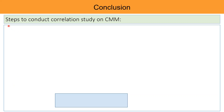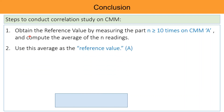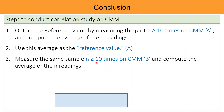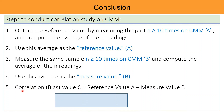Steps to conduct a correlation study on CMM: Obtain the reference value by measuring the part more than 10 times on CMM A and compute the average of the n readings — use this average as reference value A. Measure the same sample more than 10 times on another CMM B and compute the average of the n readings — use this average as measured value B. The correlation or bias C is equal to reference value A minus reference value B. So C = A − B is the bias between the two measuring machines.